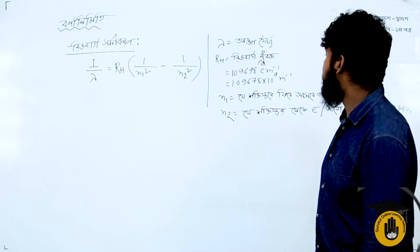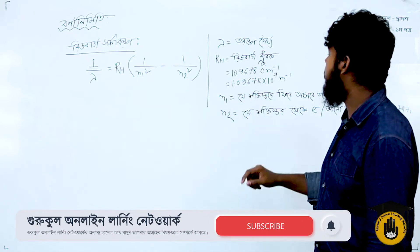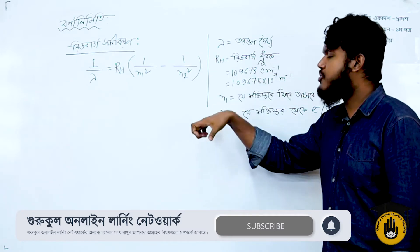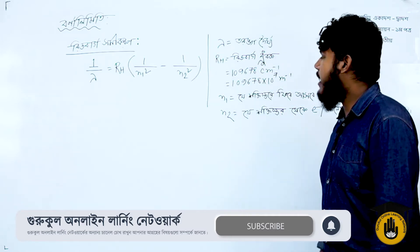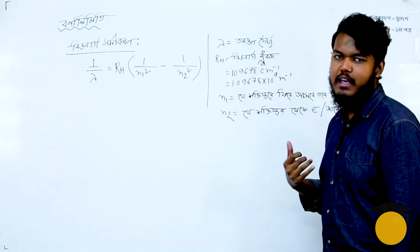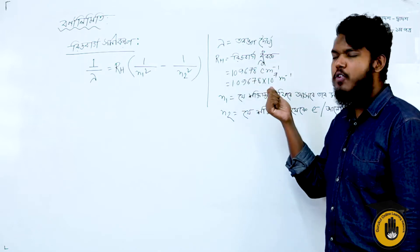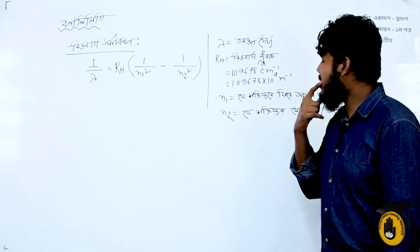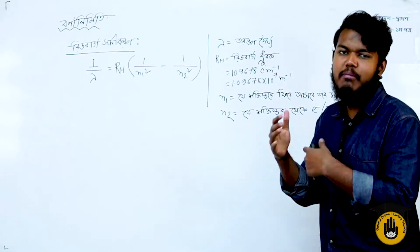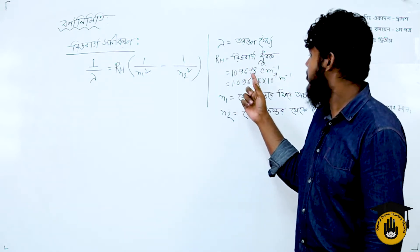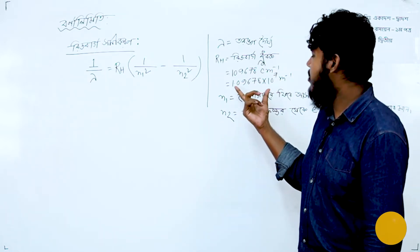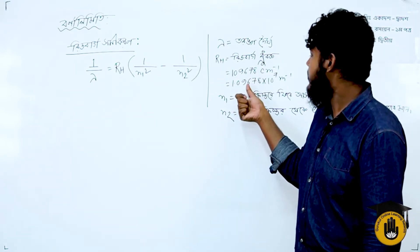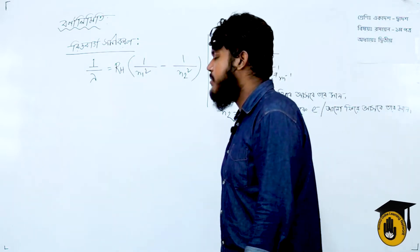The value of RH is 1.09678 × 10 to the power 7 meter inverse. This can also be remembered as a phone number style: 10988 cm⁻¹. Another form of the value is 1010798 cm⁻¹.